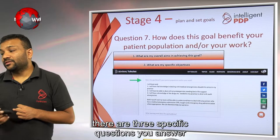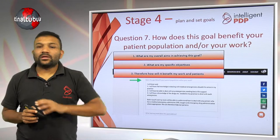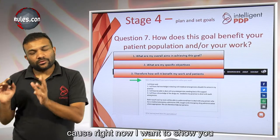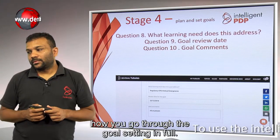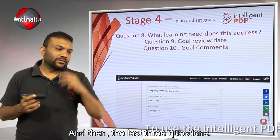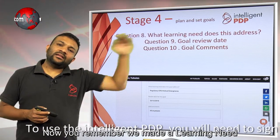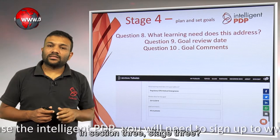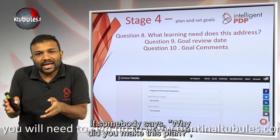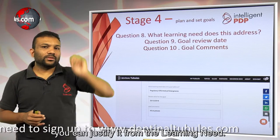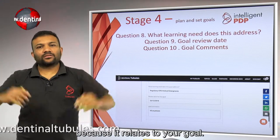When you answer this section, there are three specific questions you answer to make your goal really objective. I'll tell you about those in the next section, because right now I want to show you how to go through the goal-setting form. The last questions include: what learning need does this address? You made a learning need back in Stage 3 — write that down because this relates. If somebody asks why you made this plan, you can justify it from the learning need. This is why the learning needs section was important — it relates to your goal cycle.